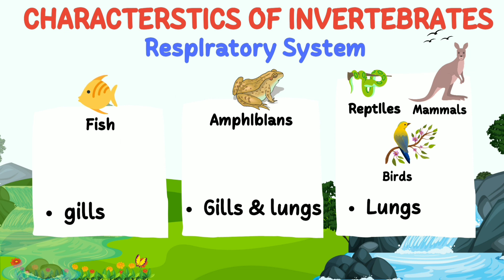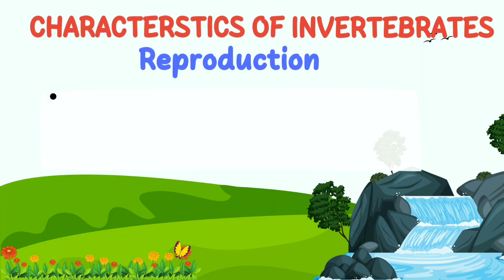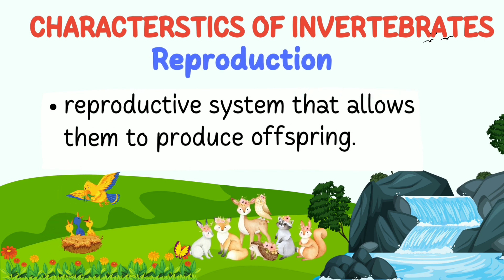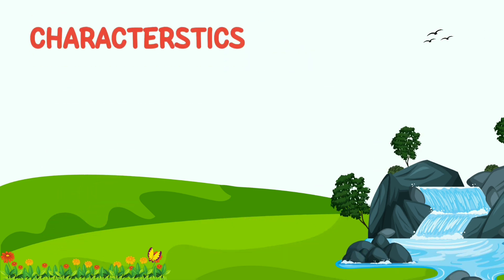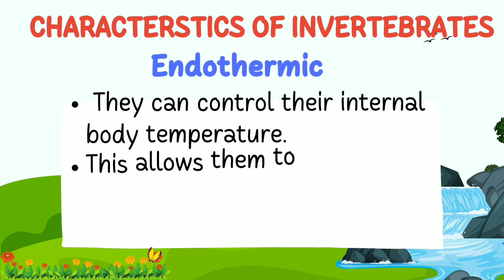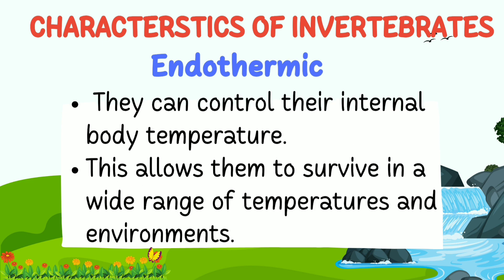Vertebrates have a reproductive system that allows them to produce offspring. Vertebrates are endothermic, which means they can control their internal body temperature, allowing them to survive in a wide range of temperatures and environments.